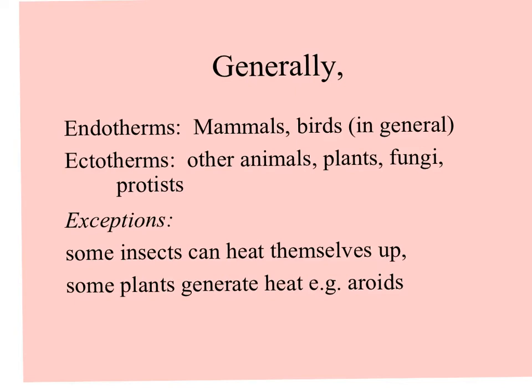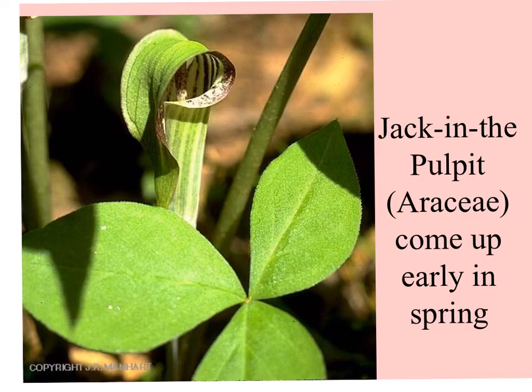There are exceptions to these generalizations. Certain insects can heat themselves up, perhaps in advance of releasing toxic chemicals. Some plants also can generate heat. One example is the jack-in-the-pulpit — this and many other members of the Araceae come up early in the spring while the ground is still covered with snow, and their inflorescences generate heat and melt the snow, attracting early flying insects.